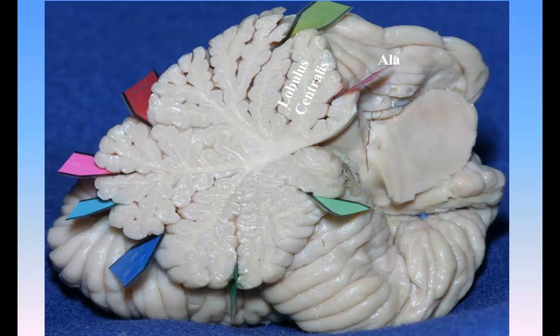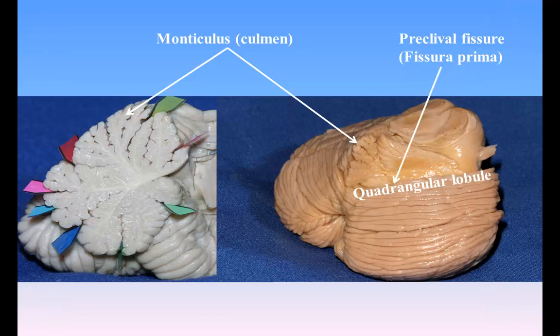The lobulus centralis and ala. The lobulus centralis is a small, square lobule situated in the anterior cerebellar notch. It overlaps the lingula, from which it is separated by the precentral fissure. Laterally, it extends along the upper and anterior part of each hemisphere, where it forms a wing-like prolongation, the ala lobuli centralis.